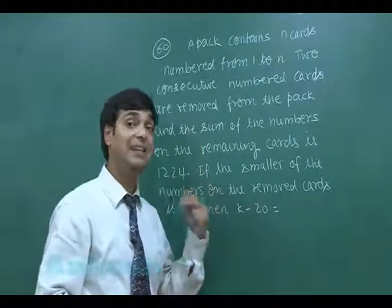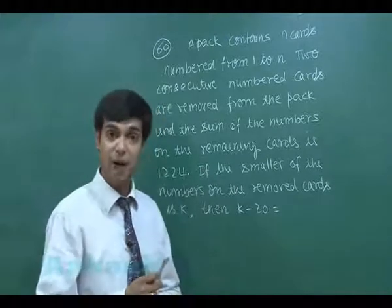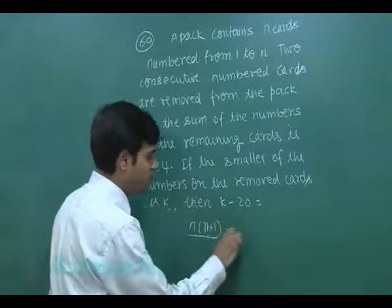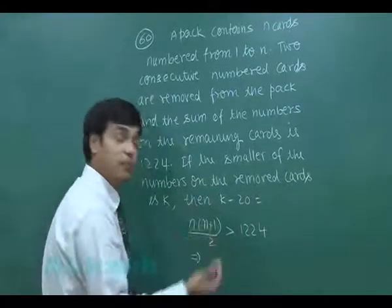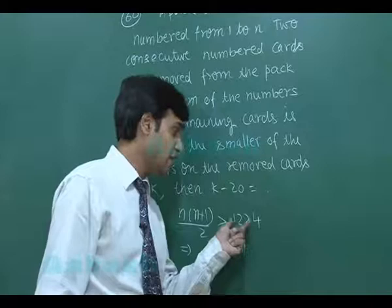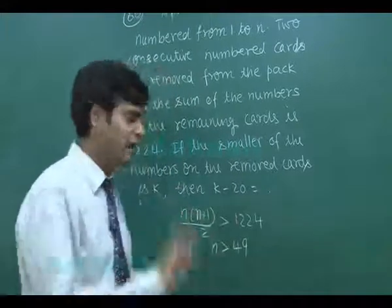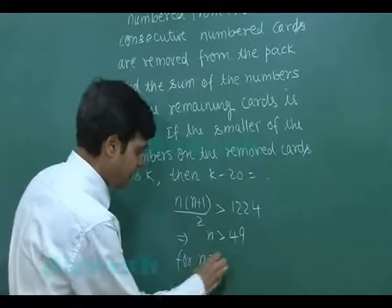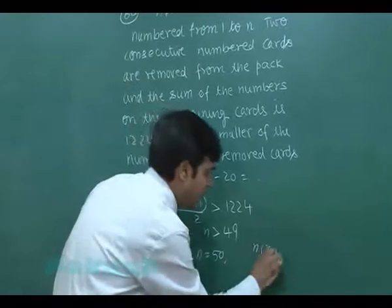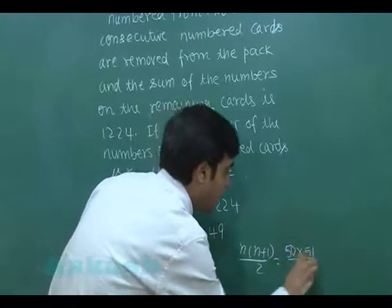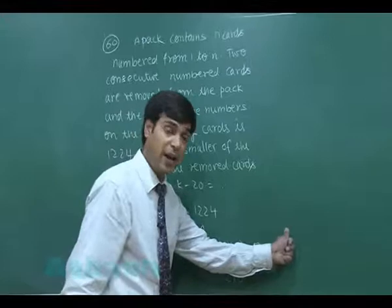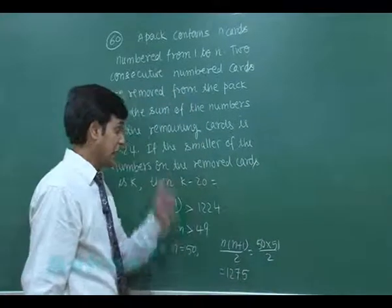The sum of all numbers on the cards would have been n*(n+1)/2 if we had not removed the two cards. This sum must be greater than 1224, so n*(n+1)/2 > 1224. Simplifying by hit and trial, n must be greater than 49. For n = 50: n*(n+1)/2 = 50*51/2 = 25*51 = 1275.